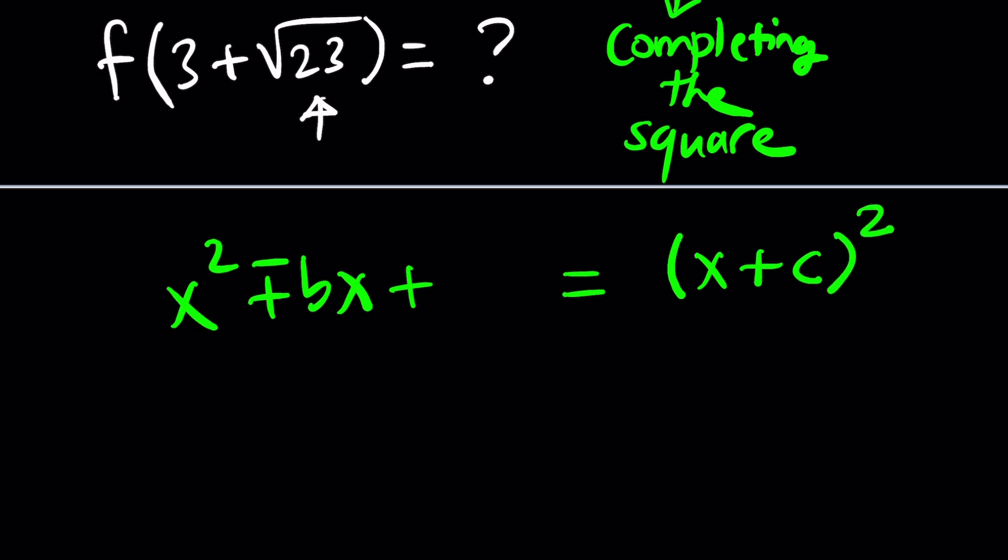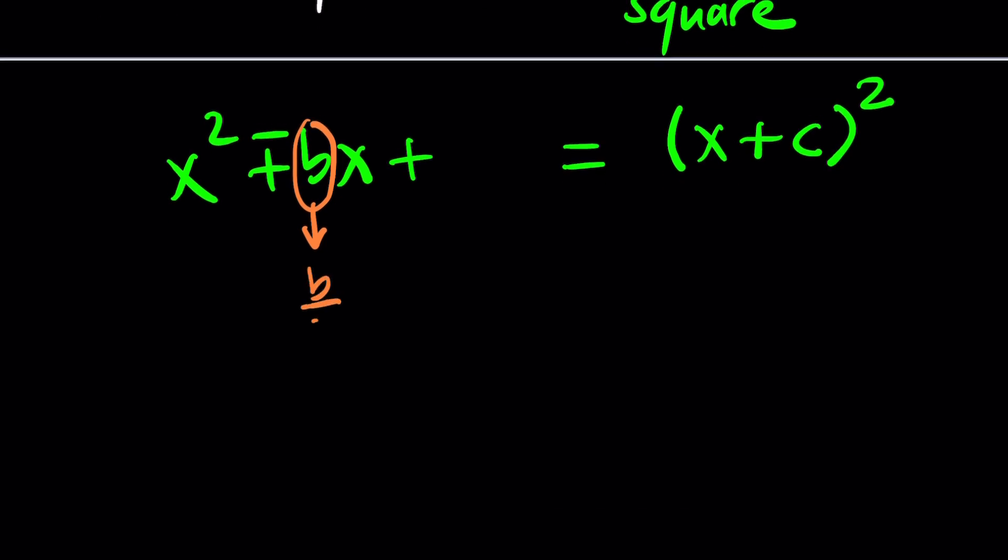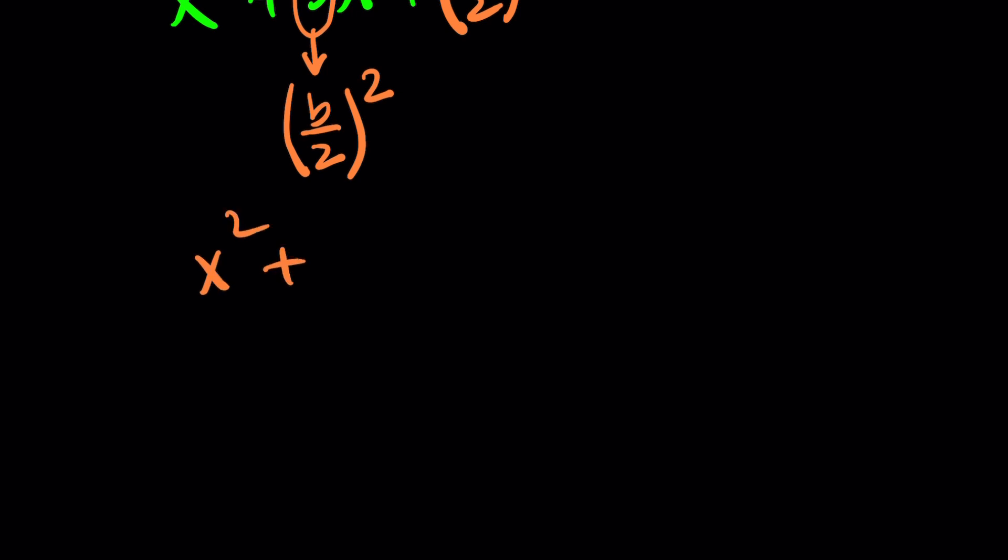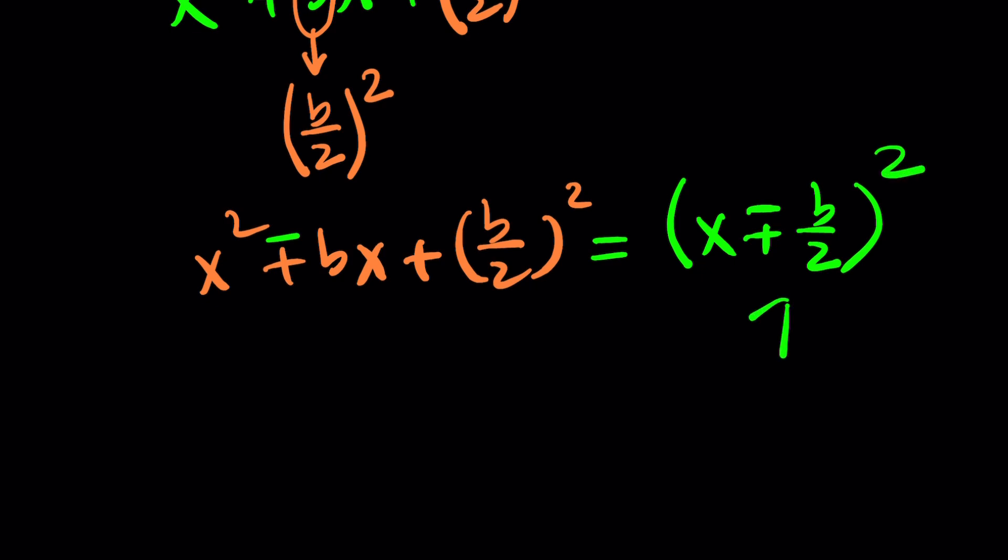So our goal is to add something, and we want to make it x plus something else squared. But what are you supposed to add? This is how you find it. You look at the coefficient of x, which is b, or plus minus b, doesn't matter, because we're going to square it eventually. So you cut the b in half, which is half of b, and then you square it, and that gives you this number. So if you add half of b squared to both sides, the left-hand side becomes a perfect square.